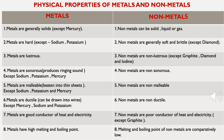Metals are lustrous, meaning they are shiny by nature. But non-metals are non-lustrous, except graphite, diamond, and iodine. Metals are also sonorous — they produce a ringing sound. Non-metals are non-sonorous. Exceptions among metals are sodium, potassium, and mercury, which don't produce a ringing sound.